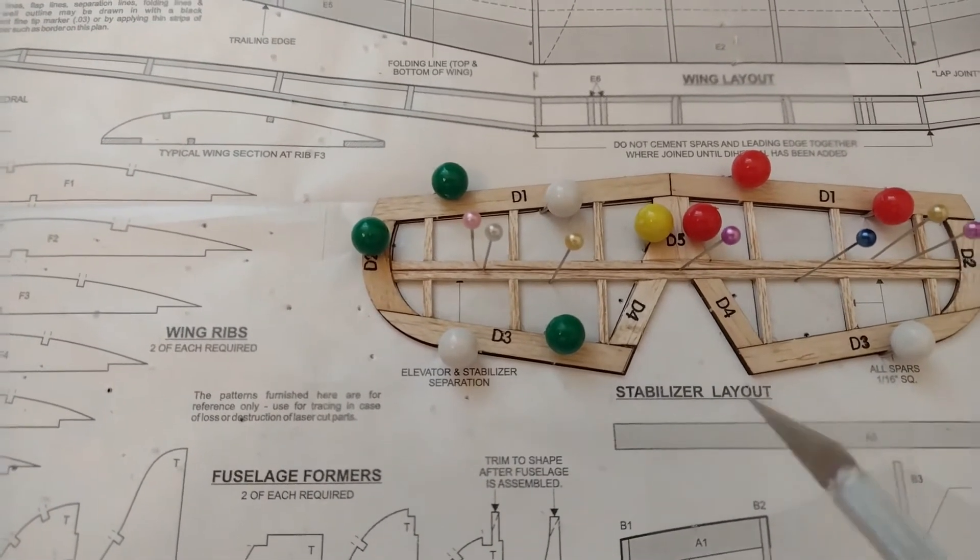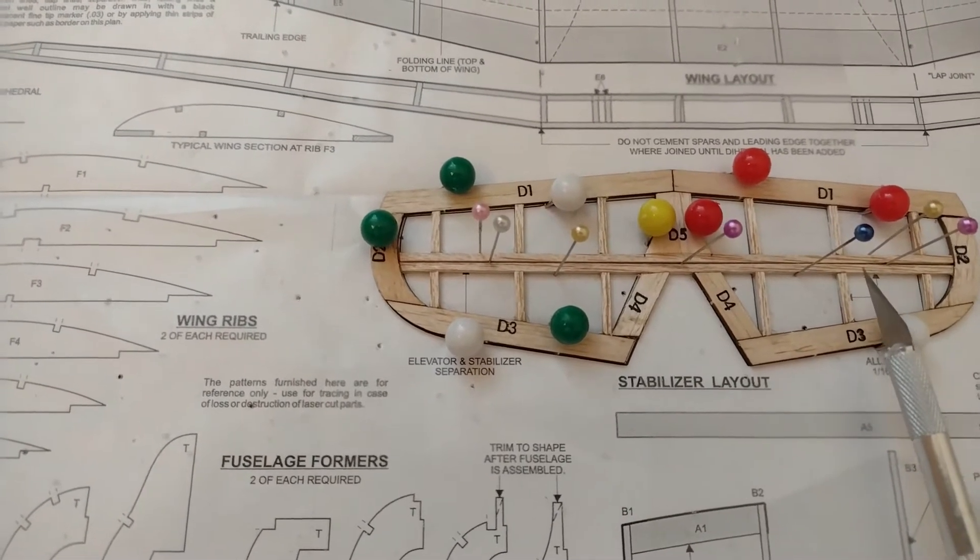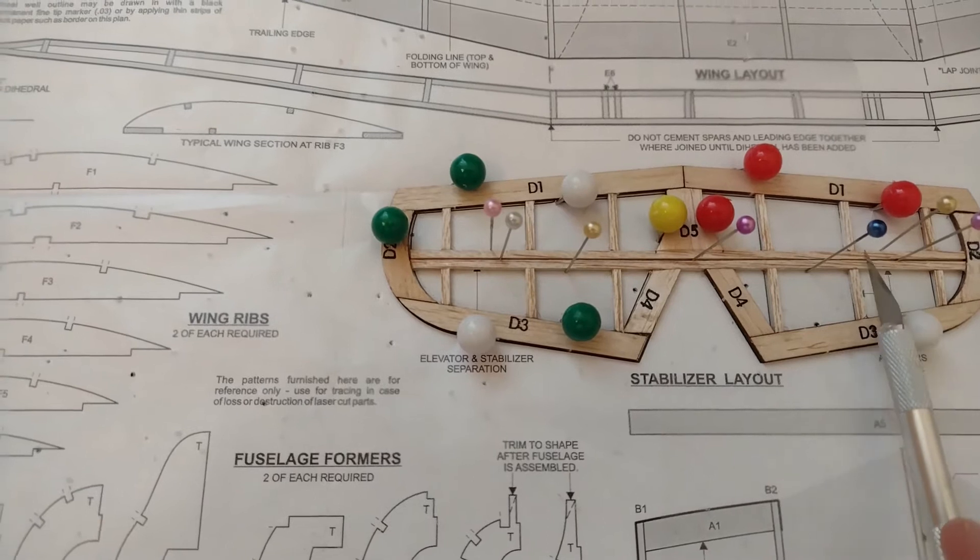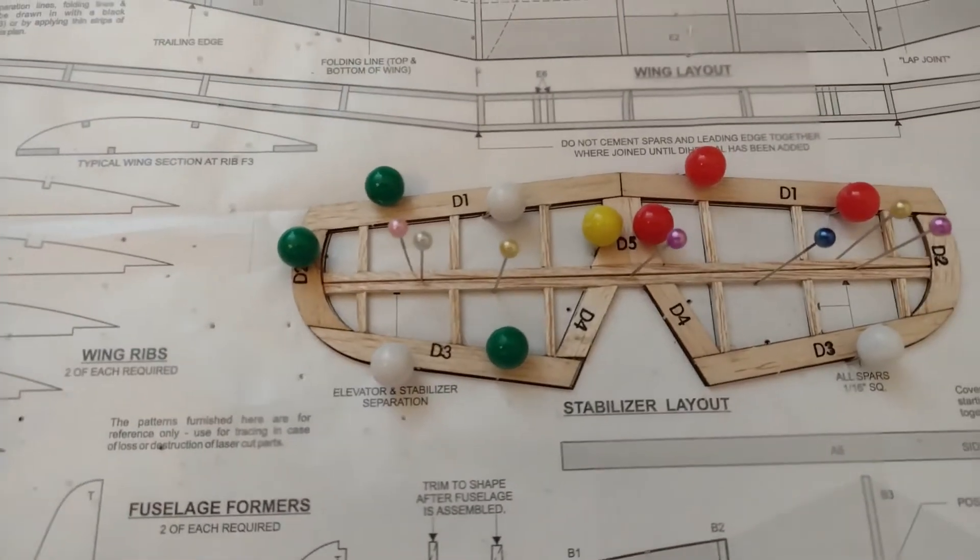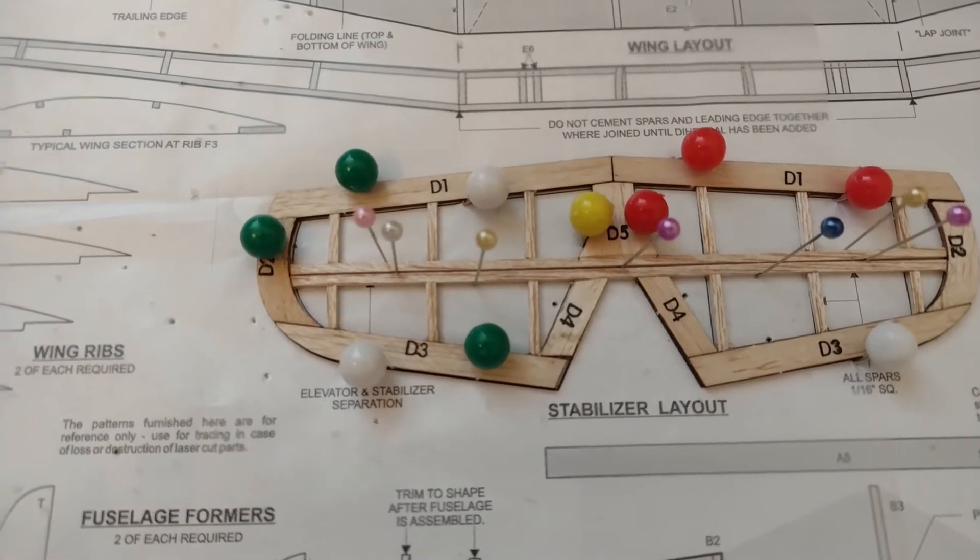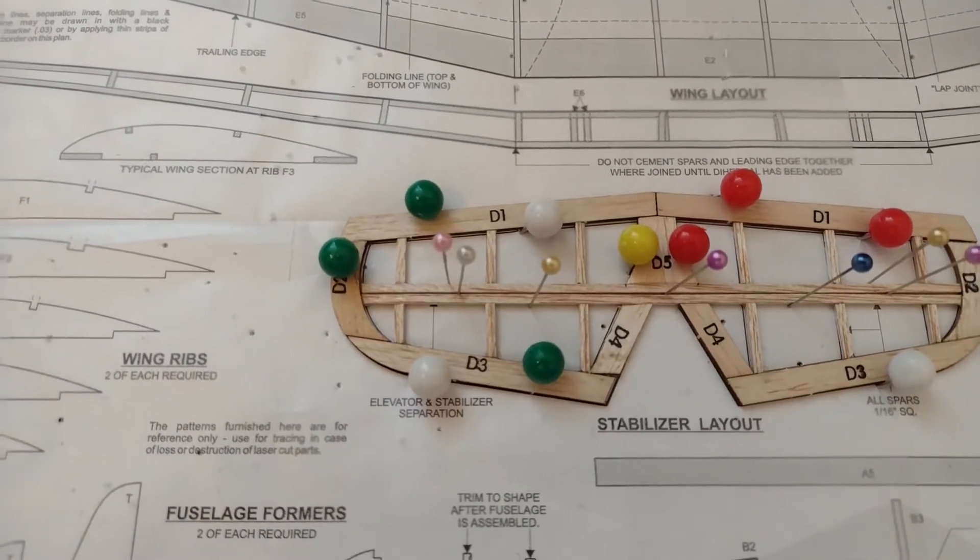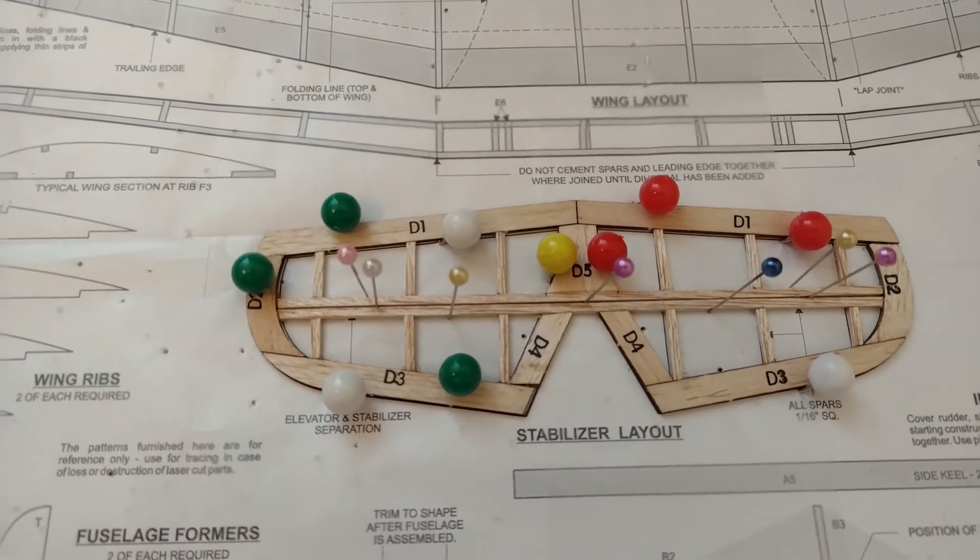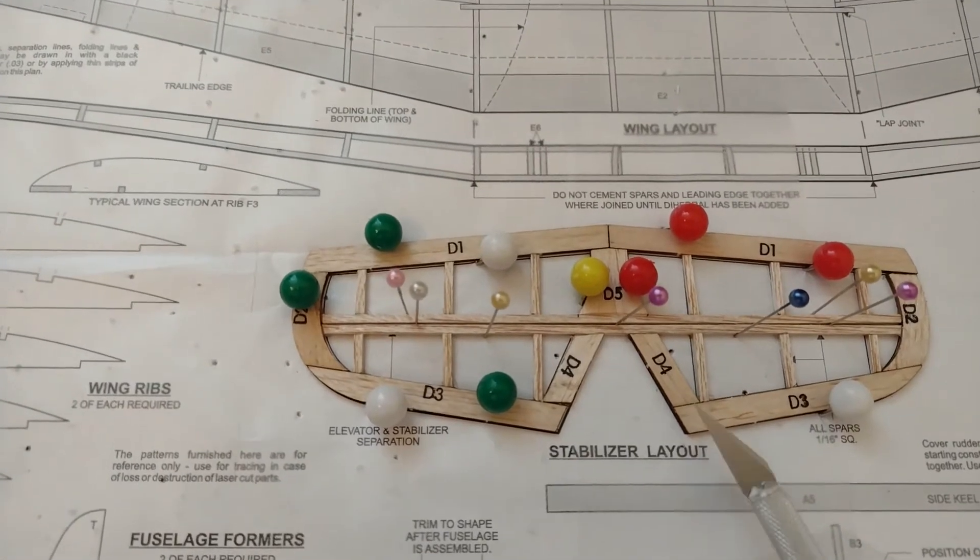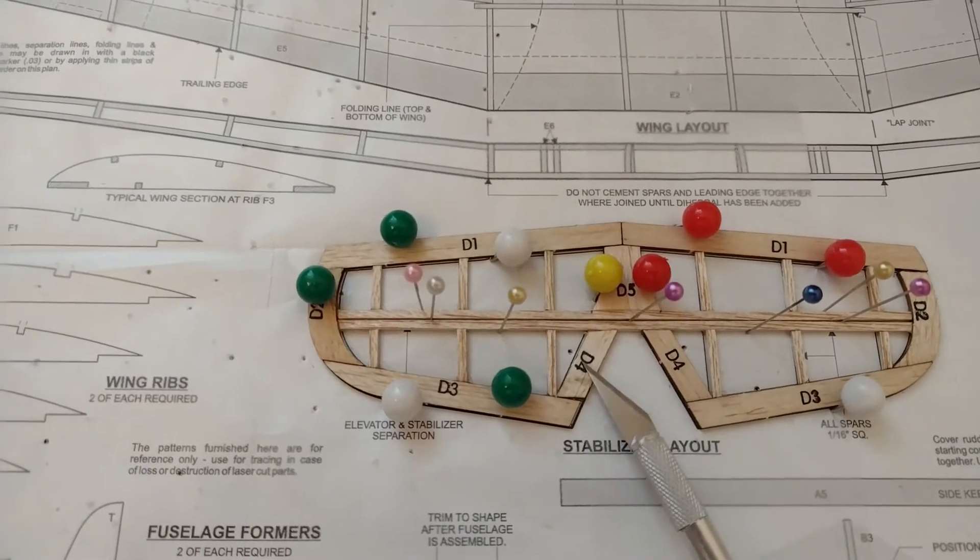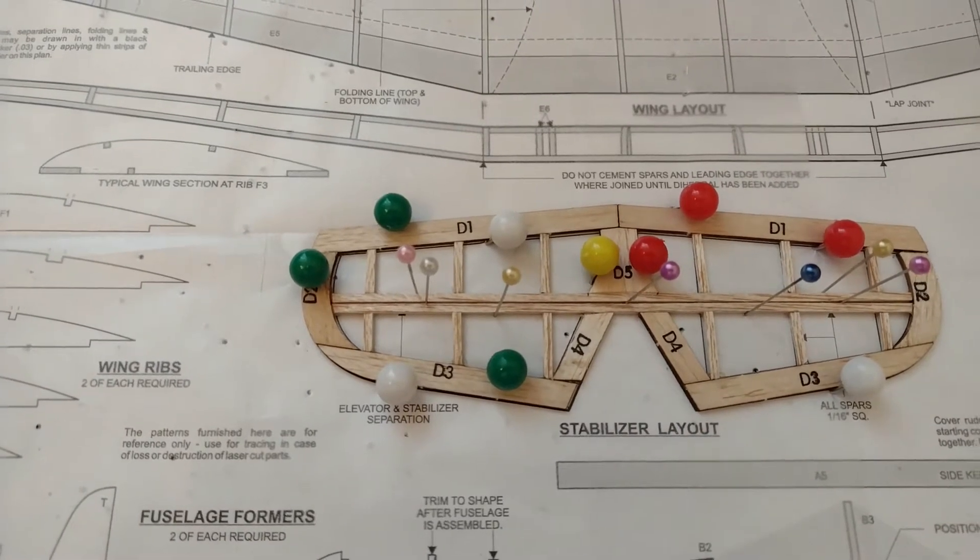I plan to put maybe two or three hinges—one here, one in the middle, and one there—so it moves nicely. That's the progress on the stabilizer and elevator. One tip I got from a YouTube video is to watch out and put the printed numbers on the same side, facing down so it doesn't get in the way.